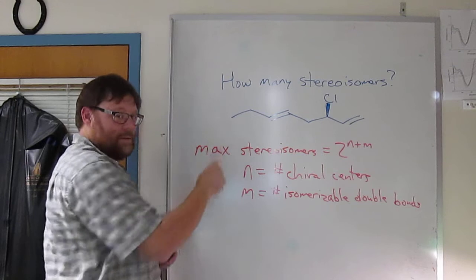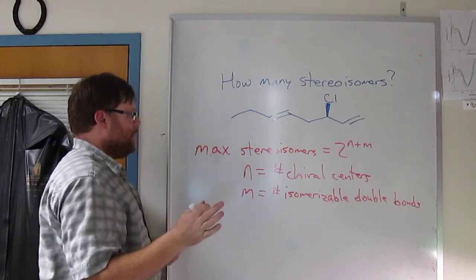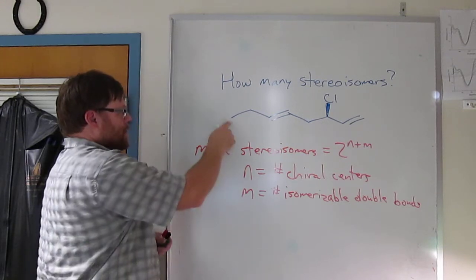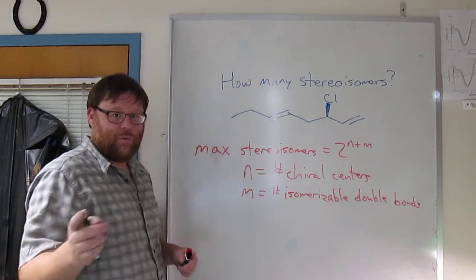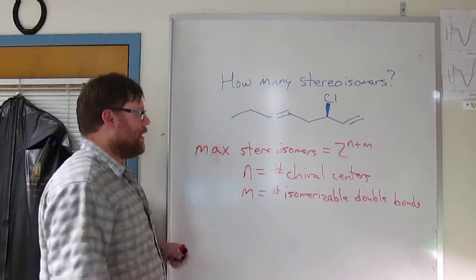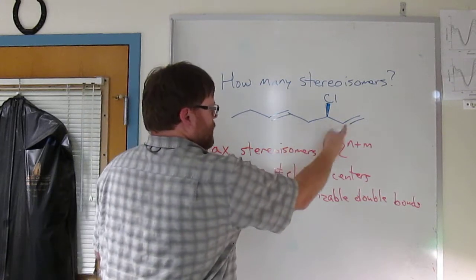This sp3 has three protons on it, three hydrogens, so it can't be chiral. A CH2 group, it's a CH2 group, right? It's got two hydrogens on it. It's not chiral. CH2, there you go.